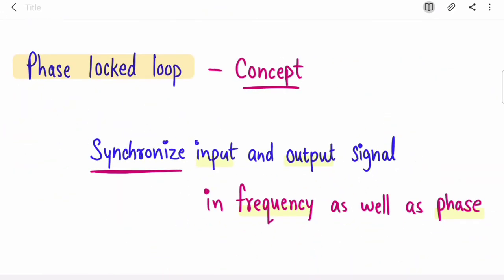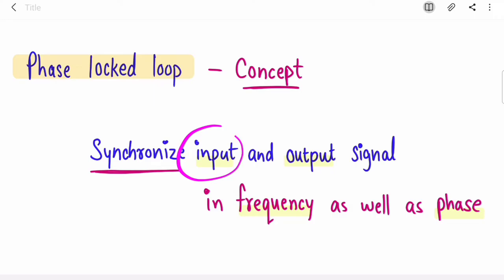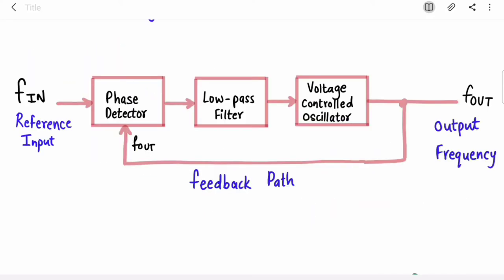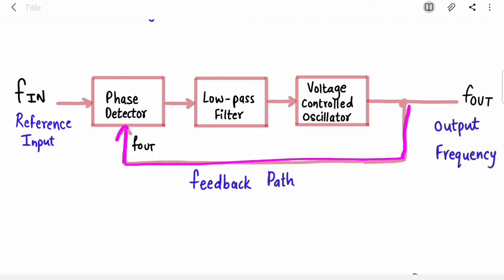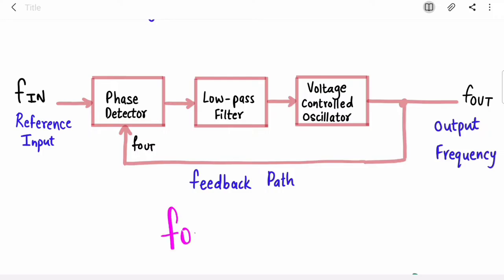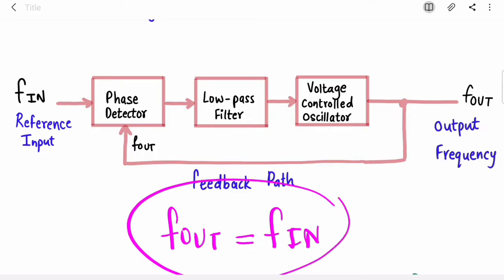Phase Locked Loop is going to synchronize your input and output signal in frequency as well as phase. You have some signal of a particular frequency and particular phase — PLL is going to match it with this reference input signal and give you a synchronized output signal. It is locking two signals, synchronizing them in a feedback loop. The goal is your f_out should be equal to f_in — it should match your reference input.